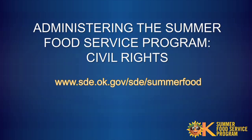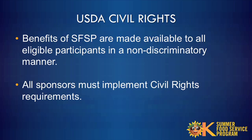All sponsors of the SFSP must comply with the Federal Civil Rights Program as part of their agreement with the Oklahoma State Department of Education Child Nutrition Programs. Civil rights requirements are intended to ensure benefits of child nutrition programs are made available to all eligible participants in a non-discriminatory manner. All sponsors receiving federal monies must implement the civil rights requirements to be eligible for the program.